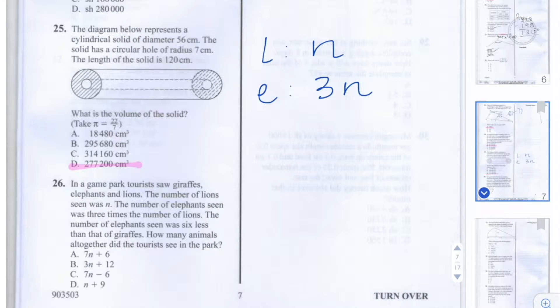The number of elephants seen was six less than the number of giraffes seen. So that means the number of giraffes seen is 3n plus 6.